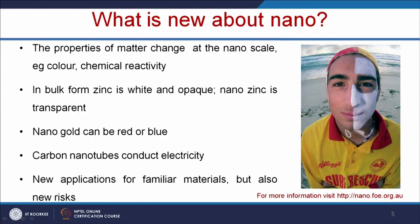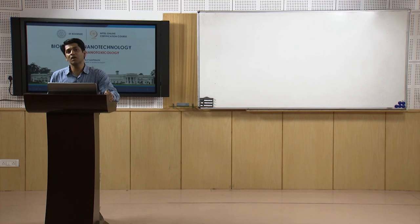You might have seen in cricket that Australian players apply a sunscreen — this is bulk zinc, which is white and opaque. When the same sunscreen is applied in nano zinc form, it is transparent. So when the material goes to the nanoscale, the properties of the material get changed. Nano gold can appear red and blue, and carbon nanotubes can conduct electricity — new applications for familiar materials, but also new risks. The inert material which we use day-to-day, when it goes to nanoscale, may have advantages but also new risks.